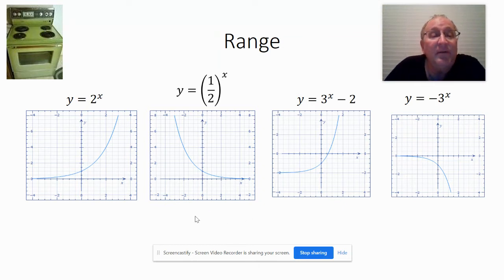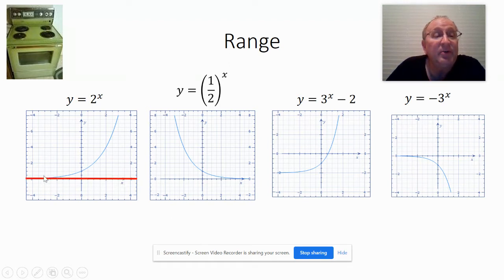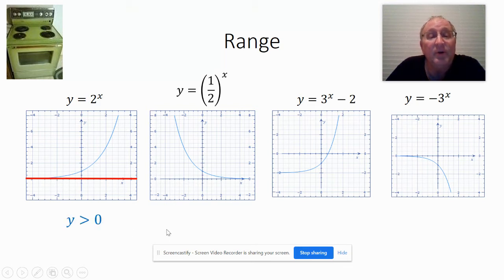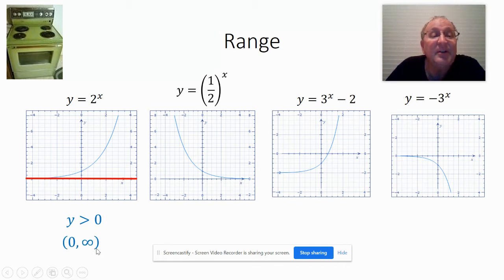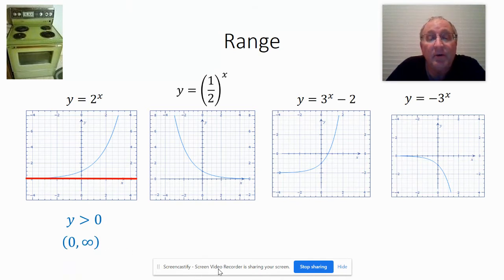The range is the y value. If you'll notice here, there's an asymptote at y equals 0, meaning it will never touch 0. And we can see the graph is above it, so our range will be y greater than 0, or anything from 0 to infinity — basically our positive numbers.